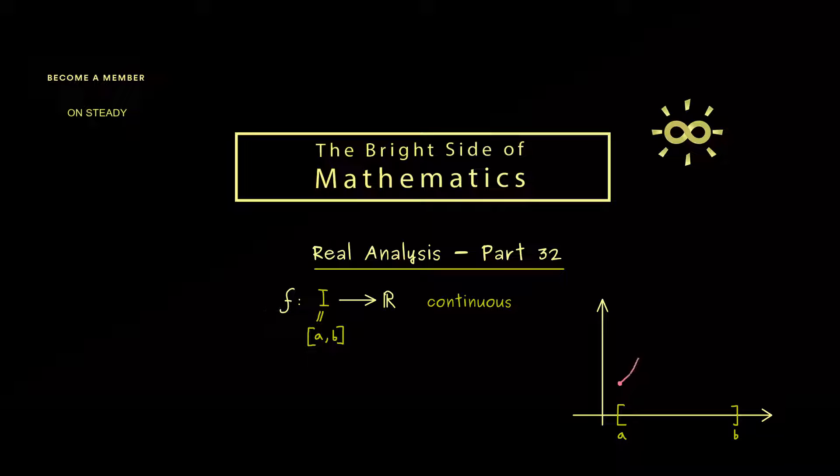For example the graph could look like this where we have the interval [a,b] on the x axis. Now you should see on the y axis we also find an interval. In this case we find f(a) at the bottom and f(b) at the top. However it could be the other way around. Now the intermediate value theorem tells us that for all values y in this interval we find a corresponding x. So all intermediate values are hit by the function.